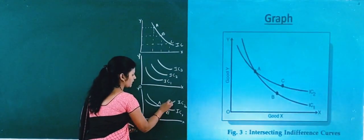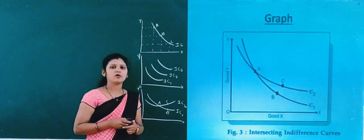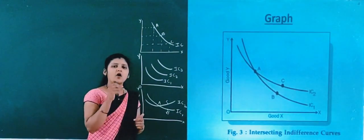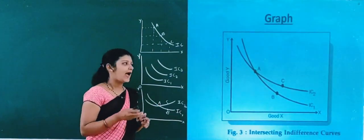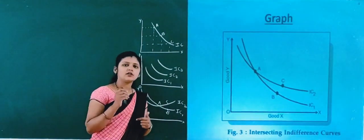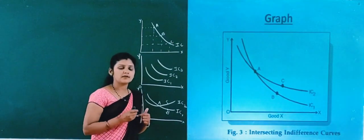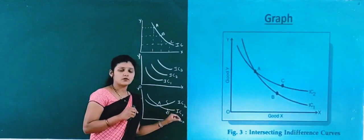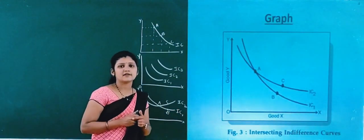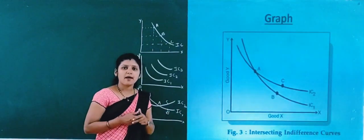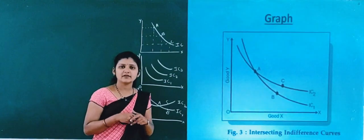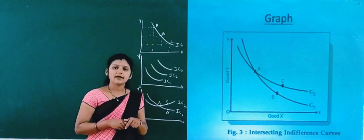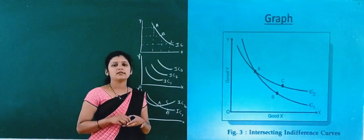This graph shows the intersecting of indifference curves. The intersecting point is combination A, meaning on the IC1 curve there are two combinations lying on it: combination A and combination B are on the same curve IC2. This is not possible because if two combinations of commodities lie on the same curve, it shows that those combinations provide the same level of satisfaction. But the indifference map shows different combinations of goods and services where each combination provides a different level of satisfaction. That is why indifference curves will never intersect each other.